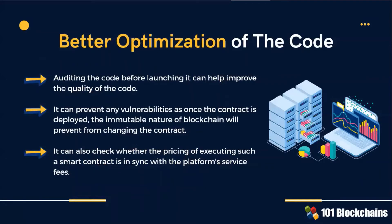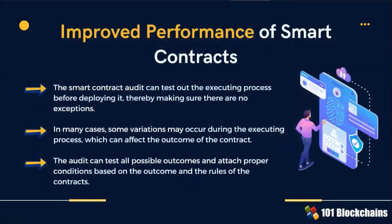As we all know, once the contract is deployed, the immutable nature of blockchain will prevent changing the contract. Improved performance of smart contracts: the smart contract audit can test out the executing process before deploying it, making sure there are no exceptions. The audit can test all possible outcomes, attach proper conditions based on the outcome, and suggest modifications to the rules of the contract.